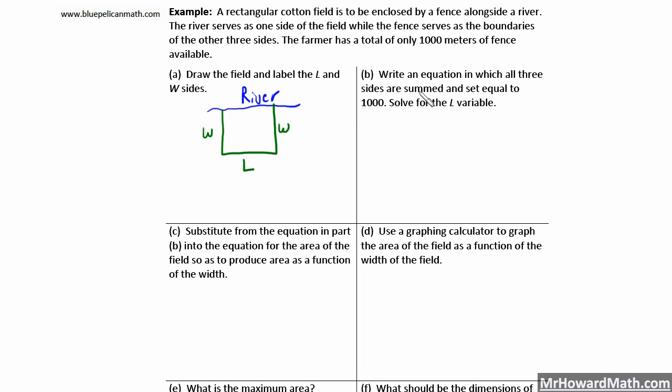Now part B, write an equation in which all three sides are summed and set equal to one thousand, and then solve for the L variable. We want to write an equation in which all three sides are summed. So that's going to be W, this one, plus the other W, this side, plus L, this side, and that's got to be equal to one thousand because that's our constraint. The farmer only has a thousand meters of fence. So let's simplify this, combine these like terms. So 2W + L = 1000. And lastly, it asks us to solve for the L variable, so we get L by itself. We'll subtract 2W, so we get L = 1000 - 2W. We're solving for L in terms of W. You will see why in this part right here.